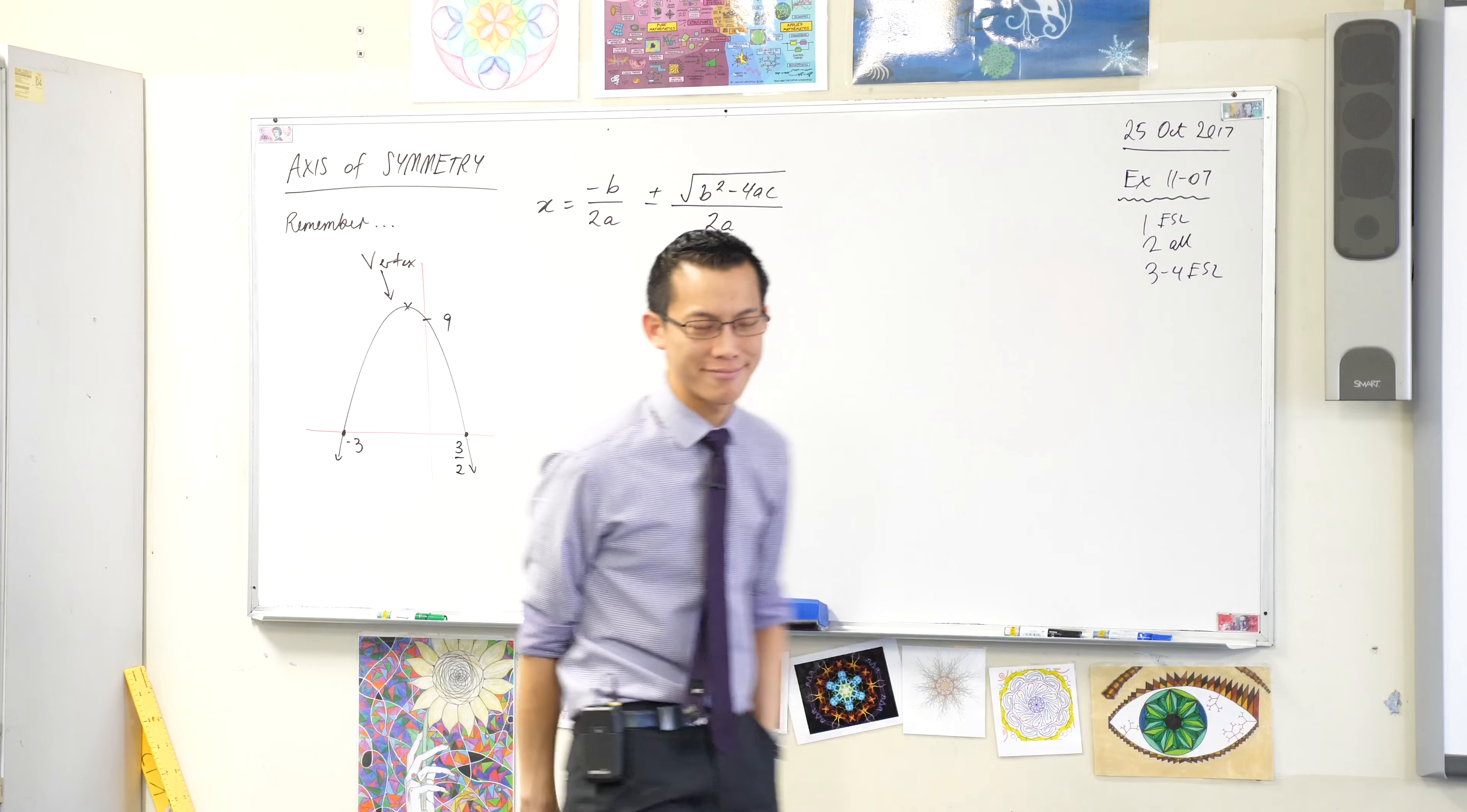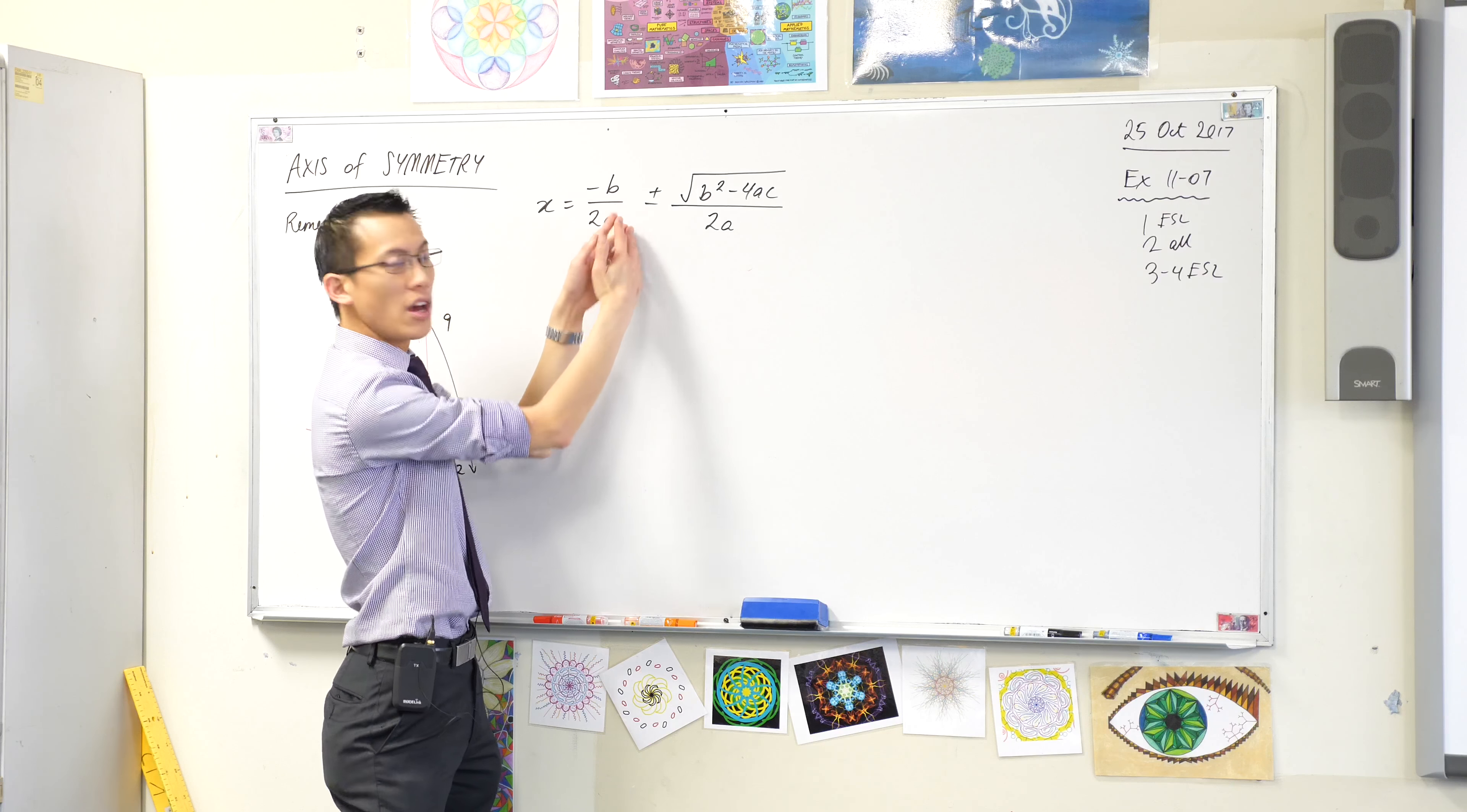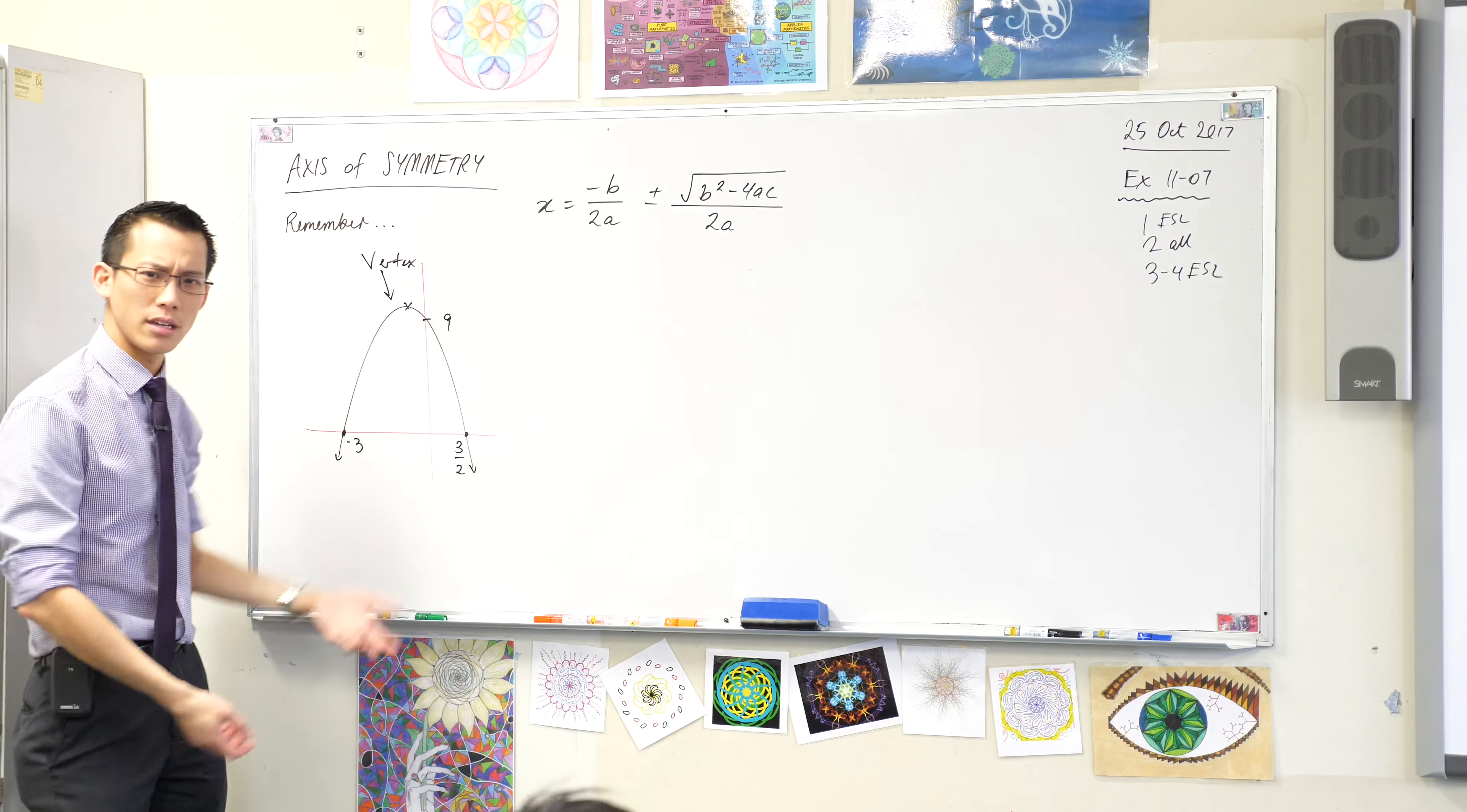This is the quadratic formula. You've seen it before. We looked at it five minutes ago. But I've done something a bit unusual. Instead of writing it as a single fraction with one denominator, I've written it as two fractions with two denominators that are the same. Now, tell me on an equation like this, if I went and did the quadratic formula, what does this tell me? Which numbers does it give me?